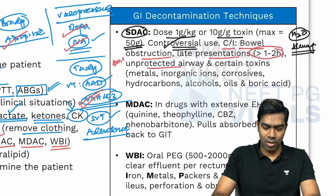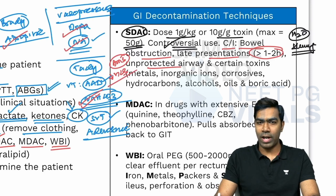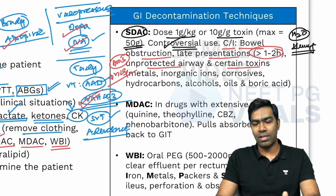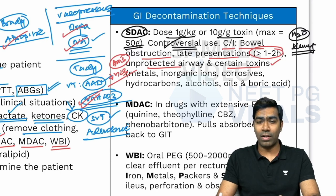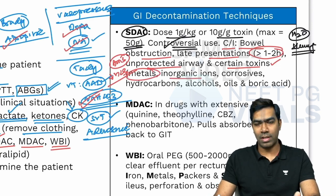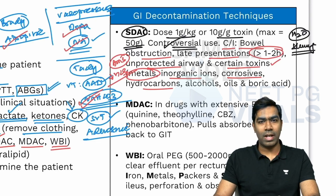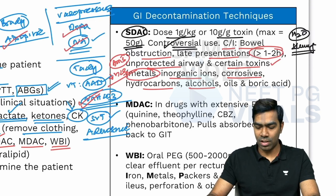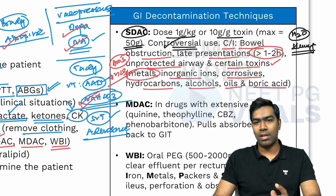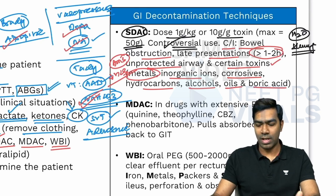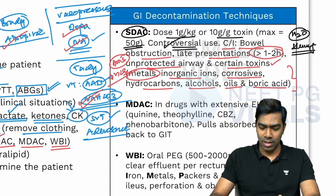If the patient has an unprotected airway — altered mental status or poor GCS — avoid activated charcoal due to high aspiration risk. Certain toxins are not well adsorbed by activated charcoal: heavy metals like iron, inorganic ions like lithium, corrosive poisons like acids or alkalis, hydrocarbons like kerosene or petrol, alcohols especially toxic alcohols like methanol and ethylene glycol, isopropanol, essential oils, and boric acid.